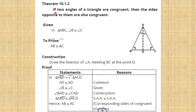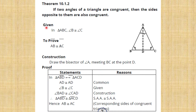We are given that if two angles of a triangle are congruent, then the sides opposite to them are also congruent. In triangle ABC, angle B is congruent to angle C.